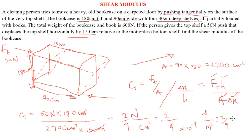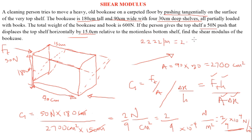Taking 10 to the power of negative 4 upward makes it positive, giving Newton per meter squared. Newton per meter squared is the same as Pascal. Since this is 0.222, multiplying by 10 to the power of 4 gives 2.222 Pascal, which is the same as 2.222 kilopascal. That is our answer.